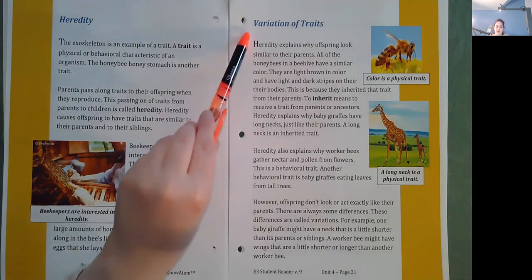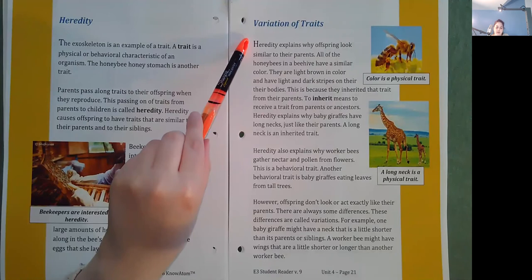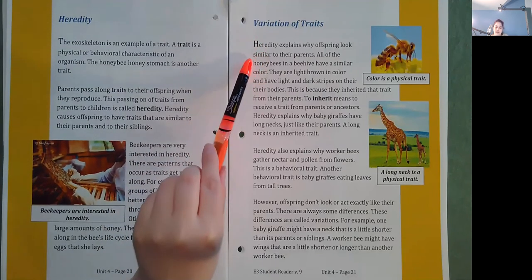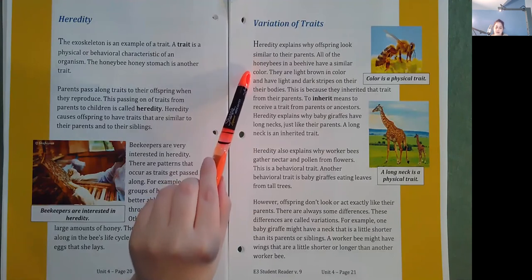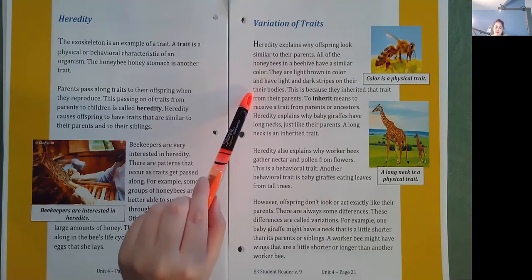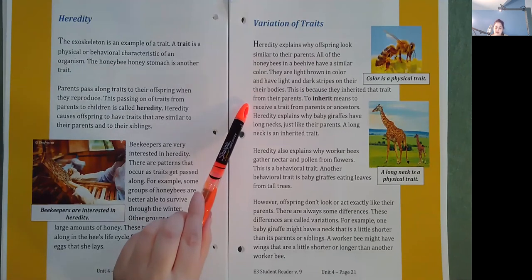Variations of traits. Heredity explains why offspring look similar to their parents. All of the honey bees in a beehive have a similar color. They are light brown in color and have light and dark stripes on their bodies. This is because they inherited that trait from their parents. To inherit means to receive a trait from parents or ancestors.